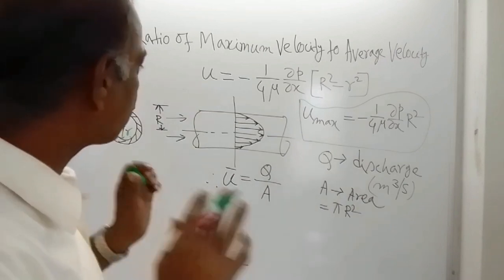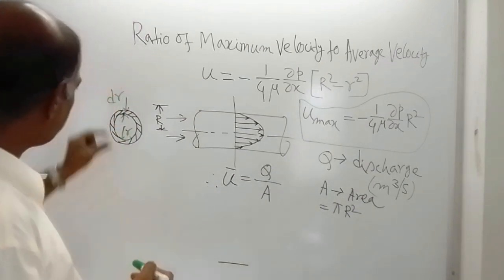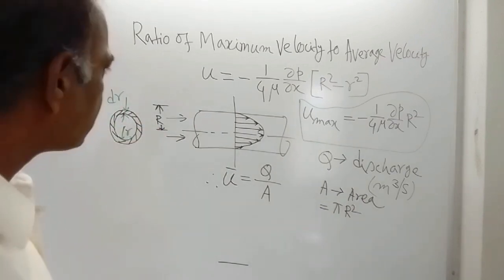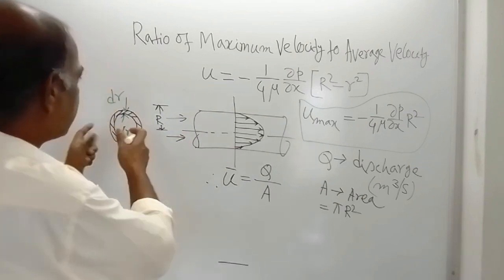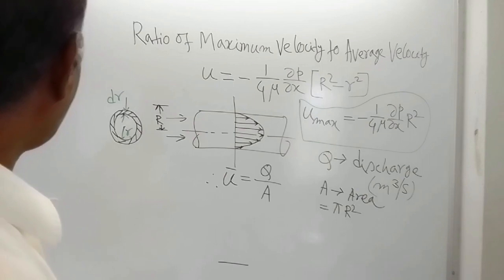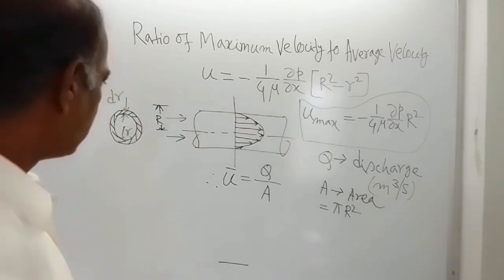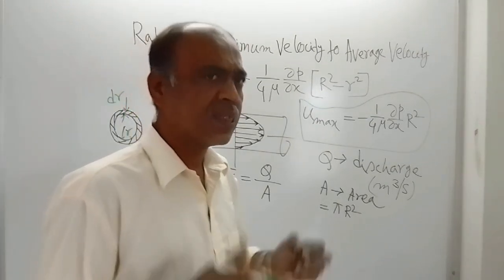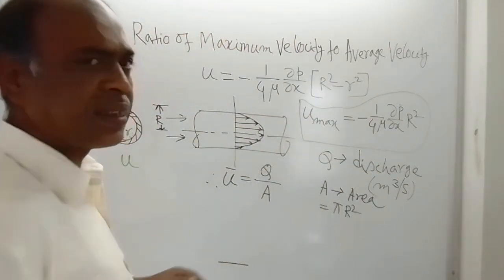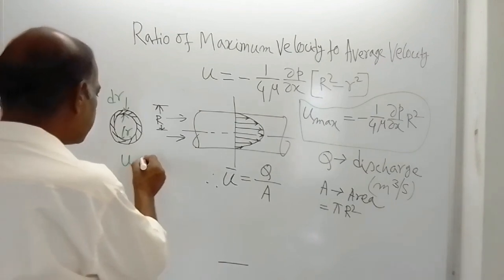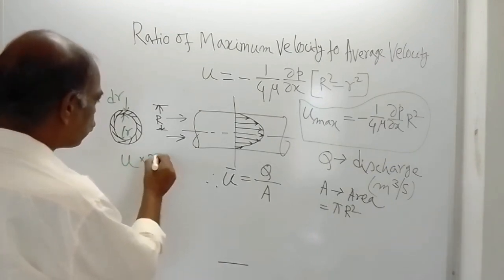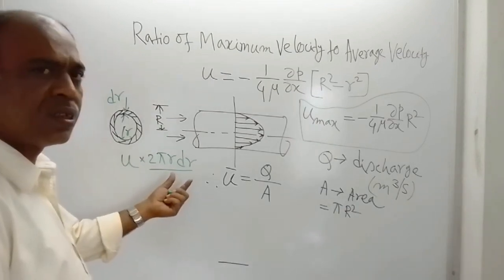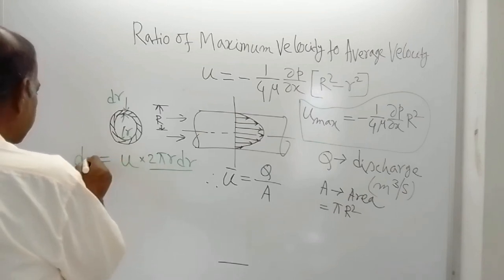Note that small r is the variable radius and capital R is the radius of the pipe. Through this elemental ring, the velocity of the fluid is U. The discharge through that elemental ring is the velocity U multiplied by the elemental area, which is 2πr·dr. So the elemental discharge is: dQ = U · 2πr · dr.